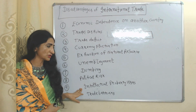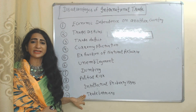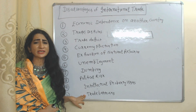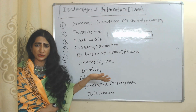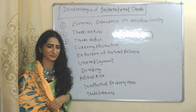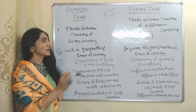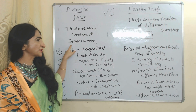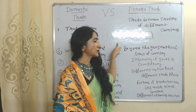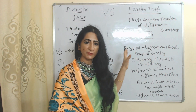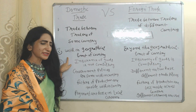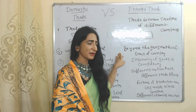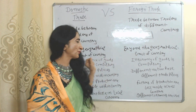Trade barriers like tariffs and quotas increase the cost of production and eventually create harmful effects on both customers and businesses. Now we will see domestic trade versus foreign trade. Domestic trade is trade between traders of the same country, but foreign trade is trade between traders of different countries. Domestic trade occurs within the geographical limits of a country, but foreign trade occurs beyond the geographical limits of a country.